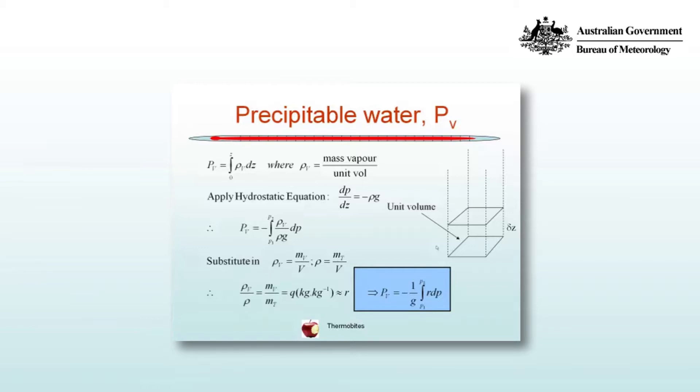We've seen in another video that we can approximate the specific humidity by the mixing ratio with an error typically of about 4%. And so the precipitable water, the total amount of water vapour in a column of atmosphere, is equal to minus 1 on G, the integral from P1 to P2 of R dp. And so what we're doing in calculating precipitable water is just adding up the contributions through each slab of pressure of the mixing ratio.